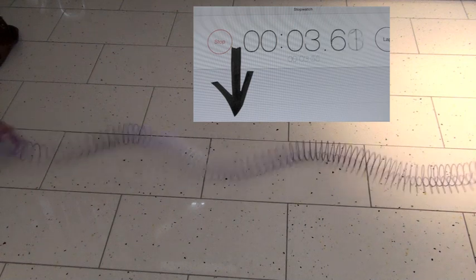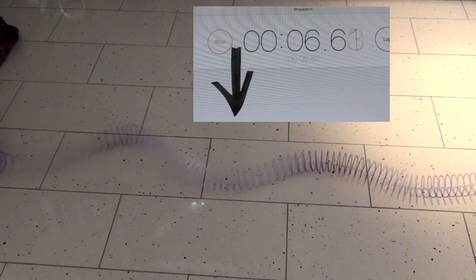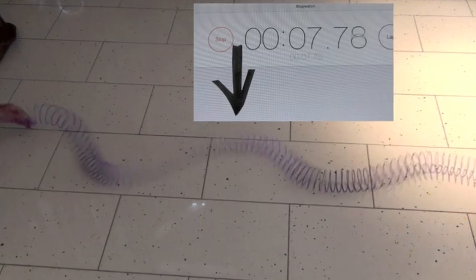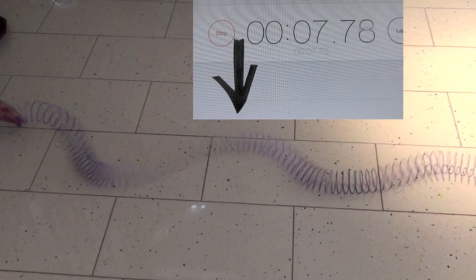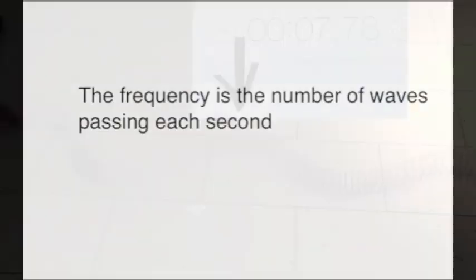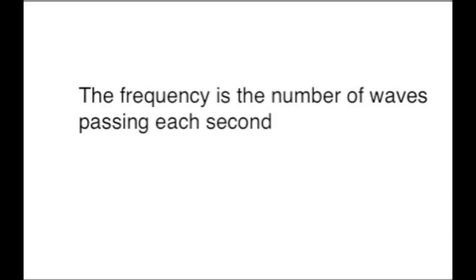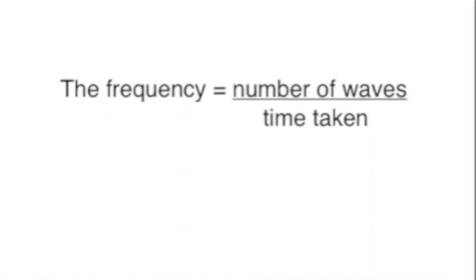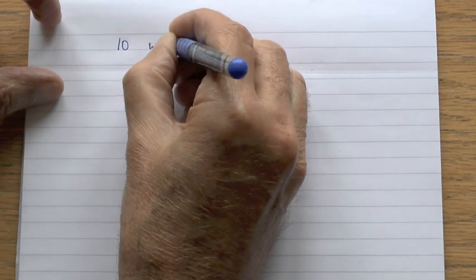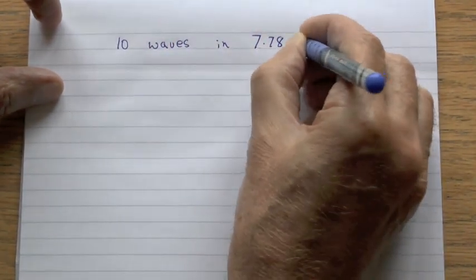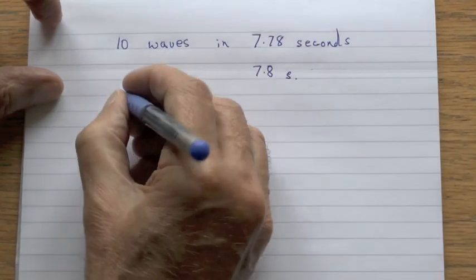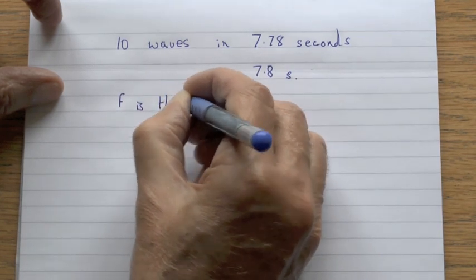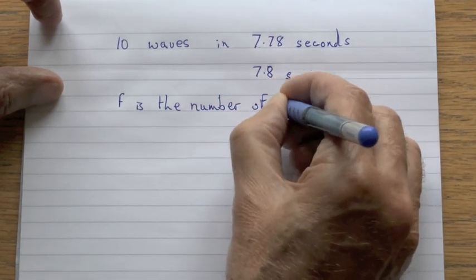1, 2, 3, 4, 5, 6, 7, 8, 9, 10. By freezing the frame after 10 waves, we can see that it took 7.8 seconds for those 10 waves to pass. Remembering that the frequency is the number of waves passing our fixed point every second, we can calculate frequency by dividing the number of waves by the time taken. So there were 10 waves passing in 7.8 seconds. Frequency is the number of waves passing our given point per second.